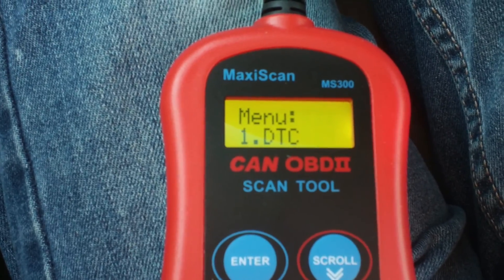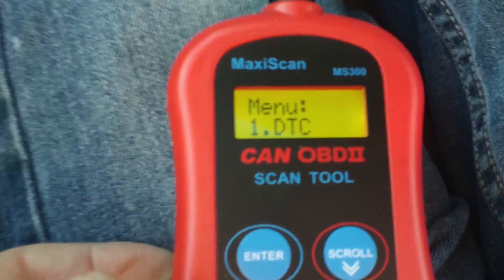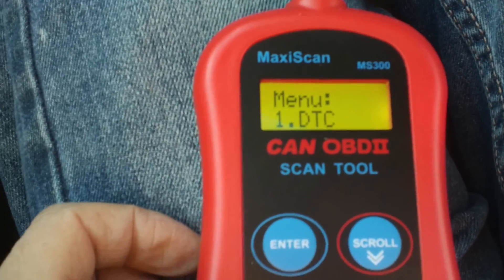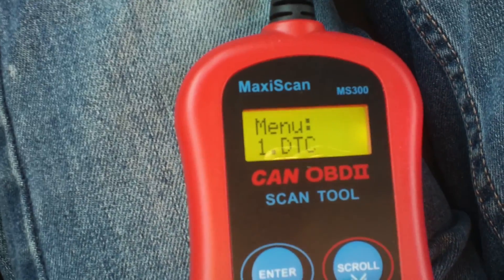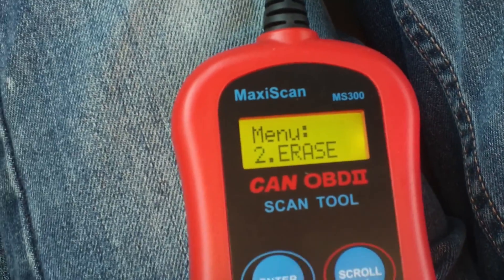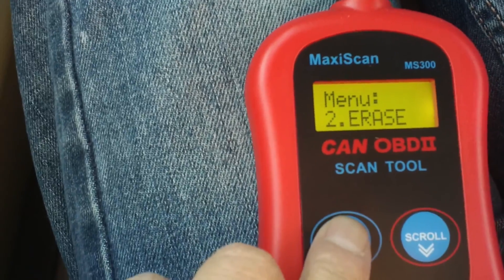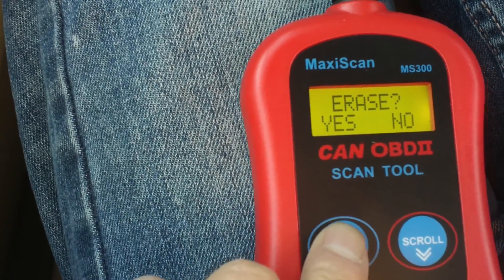After you put in the oxygen sensor, you need to reset your engine light. Either you disconnect the battery, or you use the scanner to erase. See it's gone.